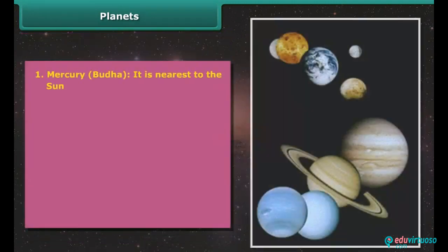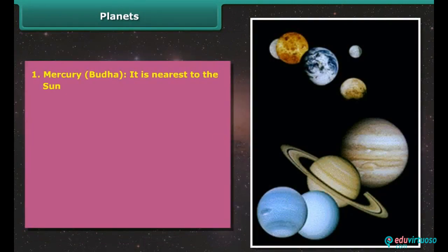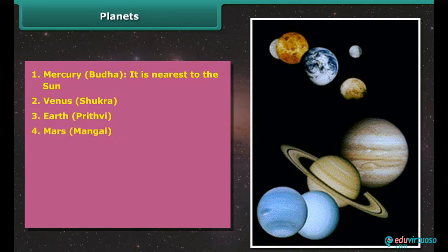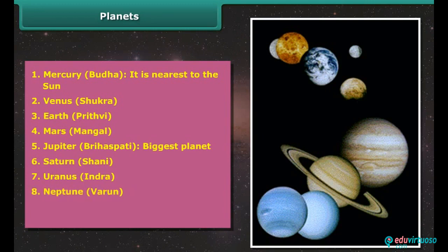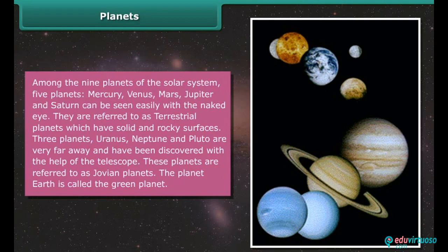The names of the planets along with their Indian names are given in the order of increasing distances from the sun: Mercury (Budh), it is the nearest to the sun; Venus (Shukra); Earth (Prithvi); Mars (Mangal); Jupiter (Brihaspati), biggest planet; Saturn (Shani); Uranus (Indra); Neptune (Varun); Pluto (Yama), smallest planet, it is farthest from the sun. Among the nine planets of the solar system, five planets—Mercury, Venus, Mars, Jupiter, and Saturn—can be seen easily with the naked eye.